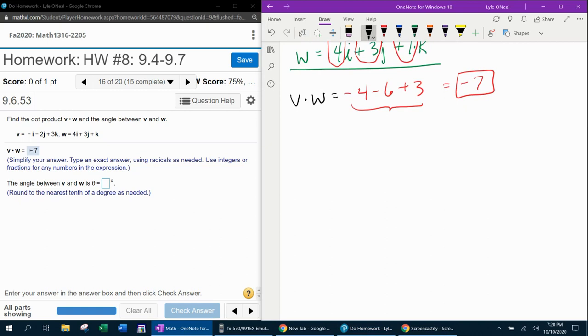To find the angle between two three-dimensional vectors, that formula is the inverse cosine of the dot product divided by the magnitudes multiplied. And so we're going to have to find the magnitude of V and W in order to get this angle.